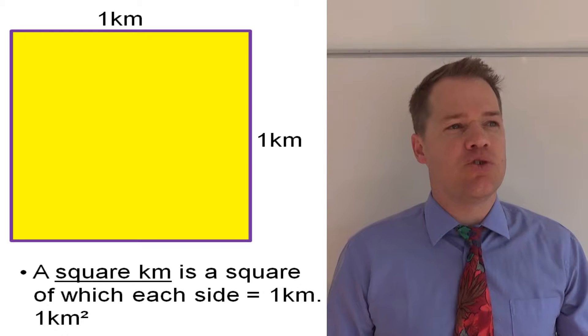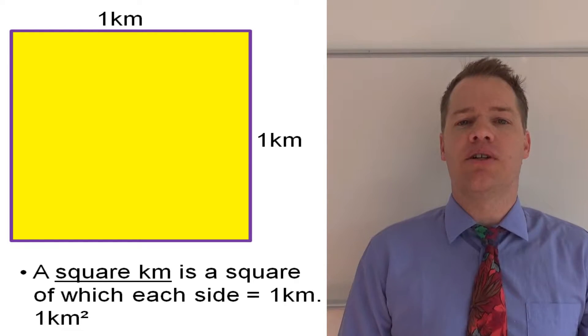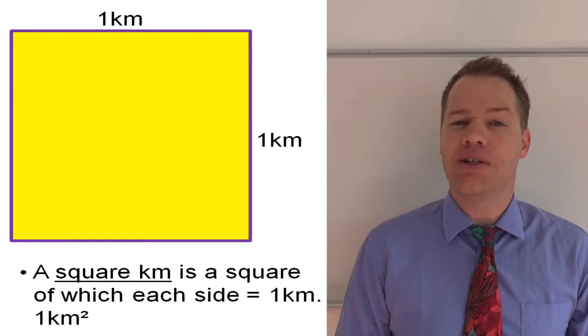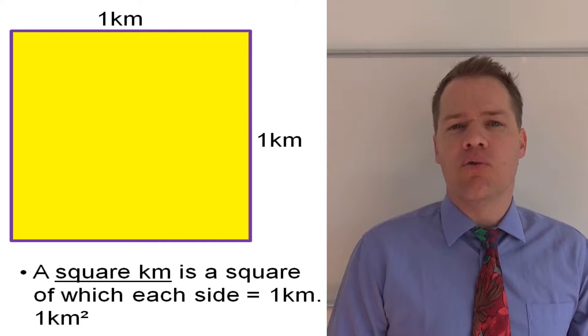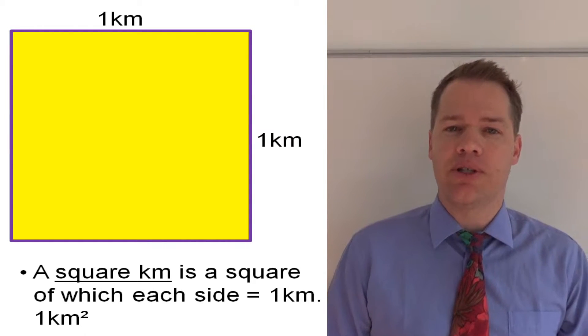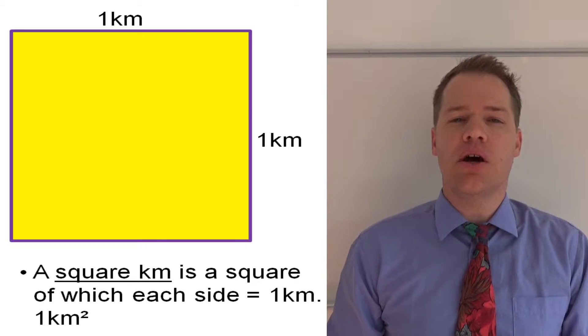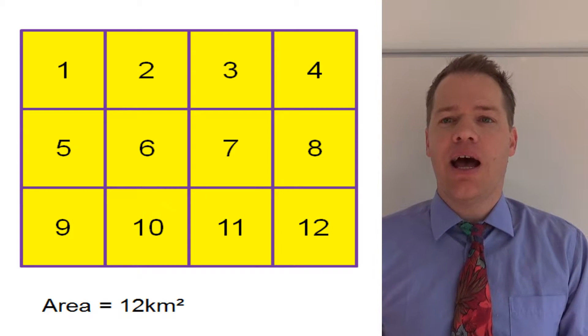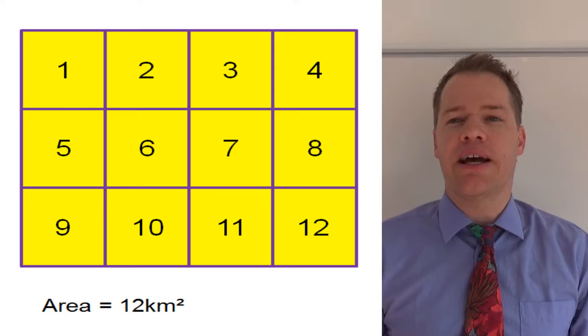Then the concept: square kilometers. What is a square kilometer? A square kilometer is a square of which each side is one kilometer long.